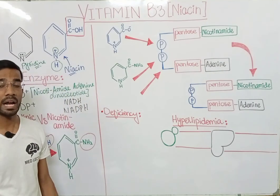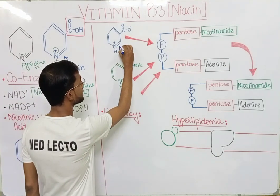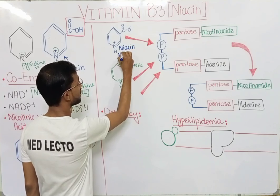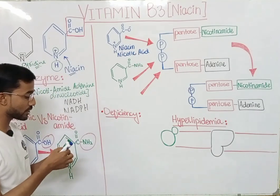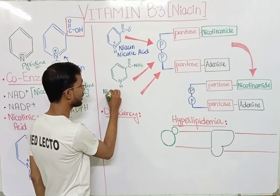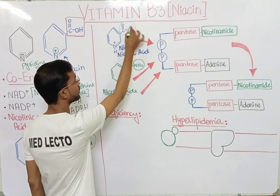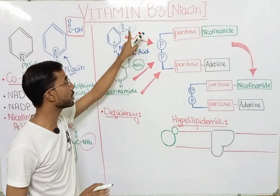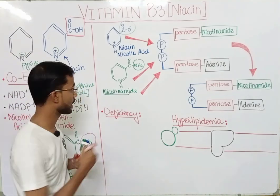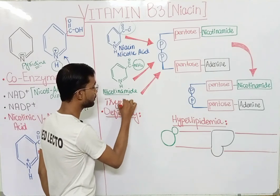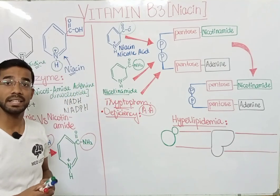Next you will see how this process happens. First of all, this is the niacin or you can say nicotinic acid. This is the nicotinamide because you will see the amide group, and here is the carboxylic group. If the hydrogen is removed, then you will see the negative charge on the oxygen. Another thing is that tryptophan, which is actually an amino acid, can also convert into the NAD positive.